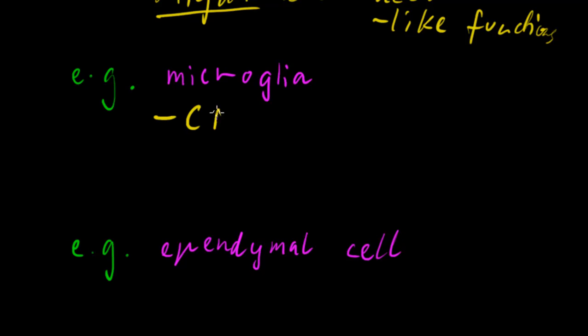Microglia are in the CNS. They have immune functions and are sort of like macrophage cells, if you know what they are. We might cover immune system content in another series.